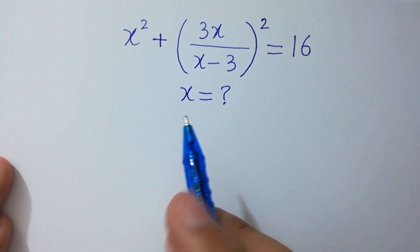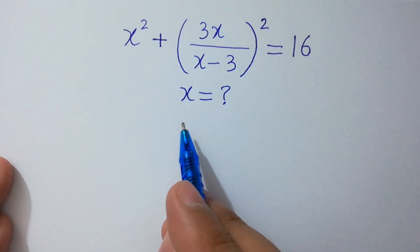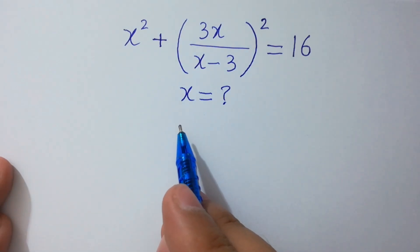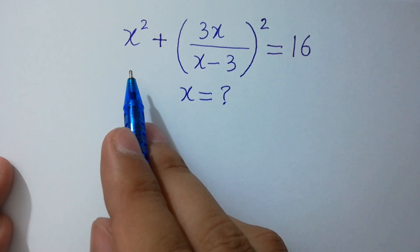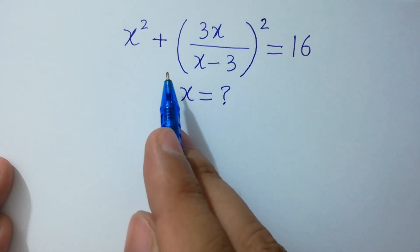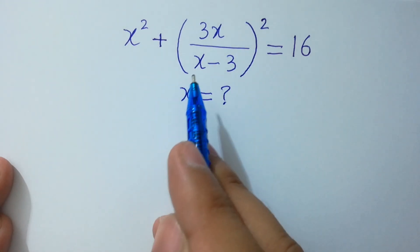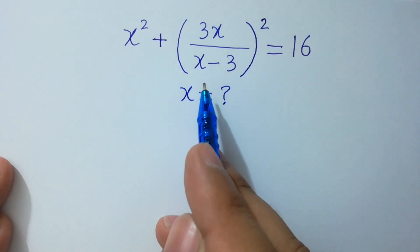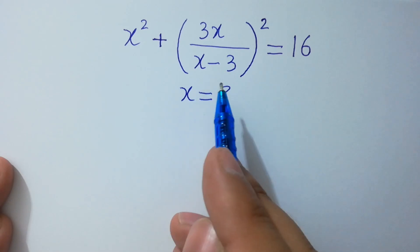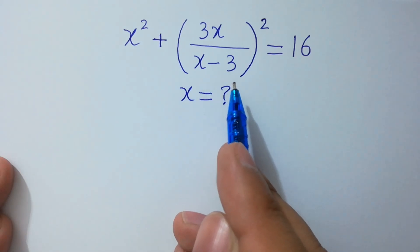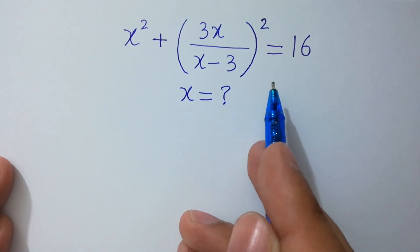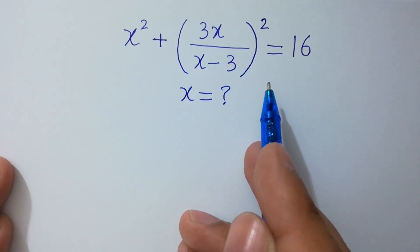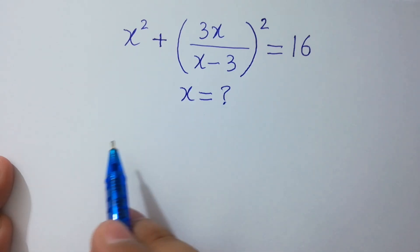Hello friends. Find the value of x if (x² + 3x) / (x-3)² equals 16. Let's solve it.